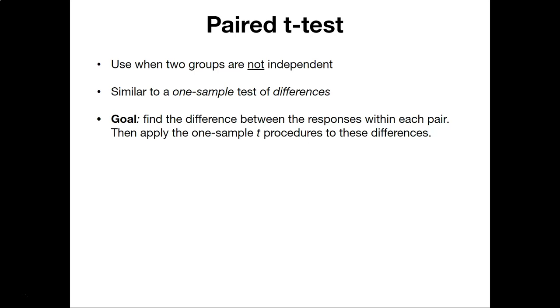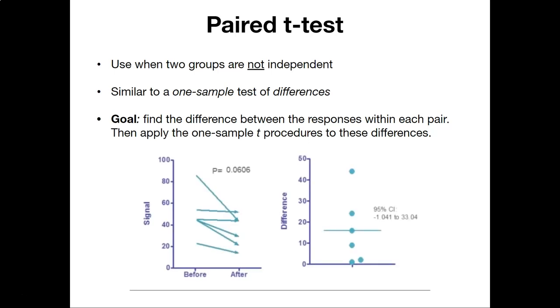Paired t-tests are used when two groups are not independent. This results from different kinds of conditions. For example, anytime you measure something before and then something happens and you measure those same things again, that would be a good example of using a paired t-test because the two groups, those two measurements, are not independent.